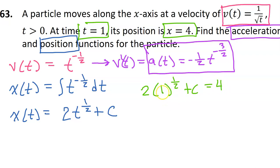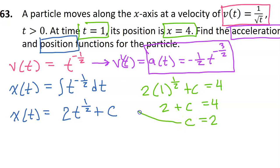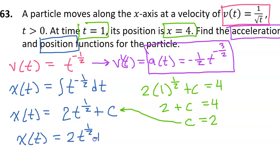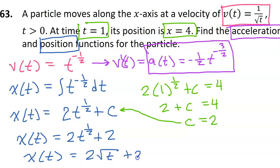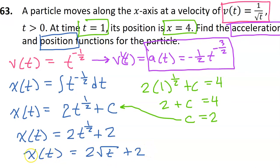1 to the 1/2 power is still 1, so 2 times 1 is 2. This is really just 2 plus c is equal to 4. Subtracting 2 from both sides gives us c is equal to 2. Substituting that back in, we will have our position function: x at t is equal to 2 times t to the 1/2 power plus 2. Or if you wanted to, you could write x at t is equal to 2 times the square root of t plus 2. So that is your position function.